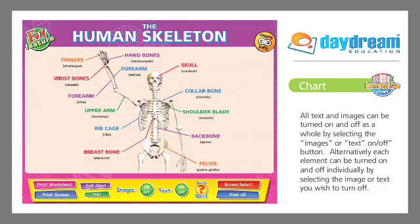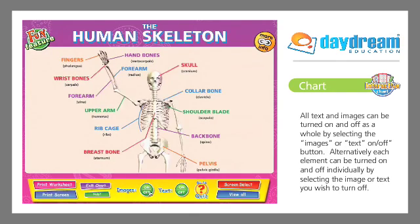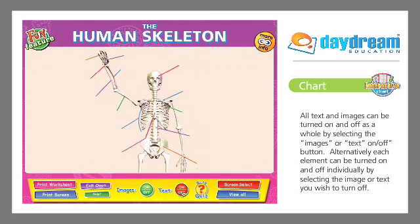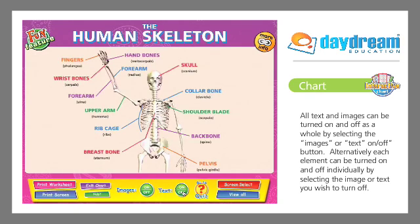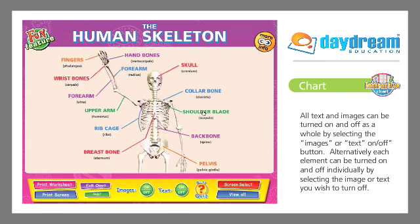All text and images can be turned on and off as a whole by selecting the Images or Text on/off button. Alternatively, each element can be turned on and off individually by selecting the image or text you wish to turn off.